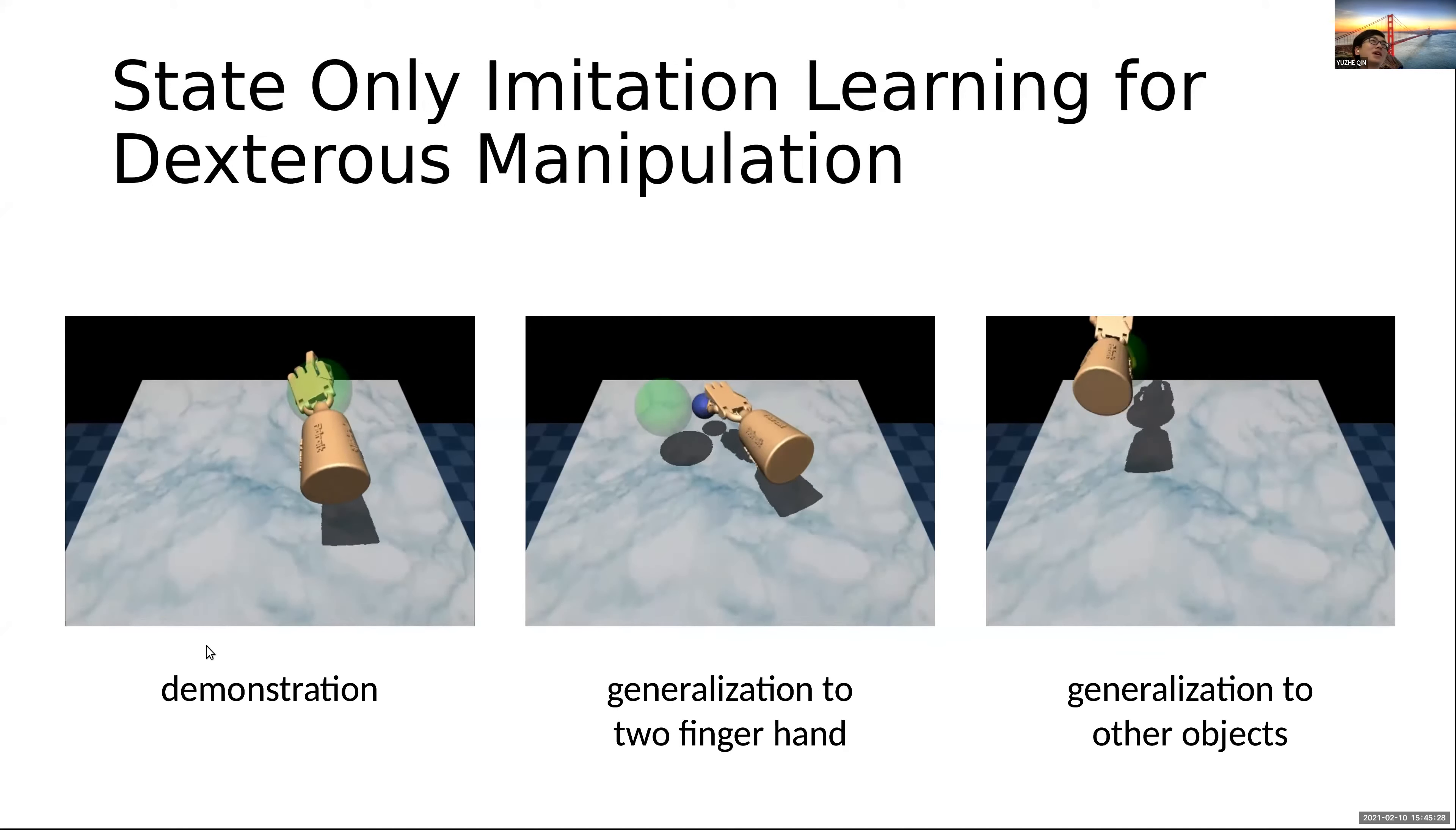Also, this kind of demonstration can be used to facilitate the learning of an intelligent multi-finger robot arm. So actually for such kind of high degree of freedom robot arm, for the traditional reinforcement learning, it may take a very long time to train such an agent, but with some human demonstrations, that will make things easier.